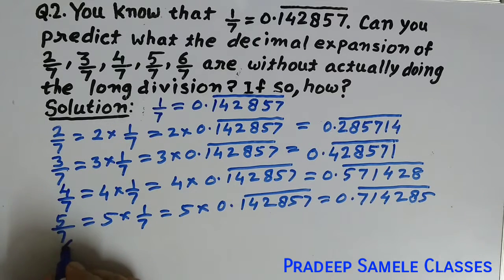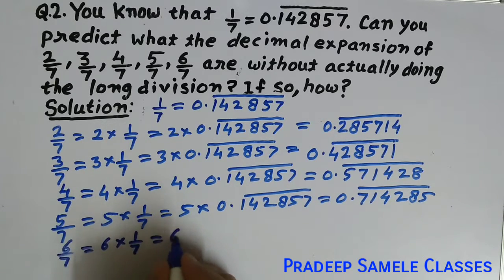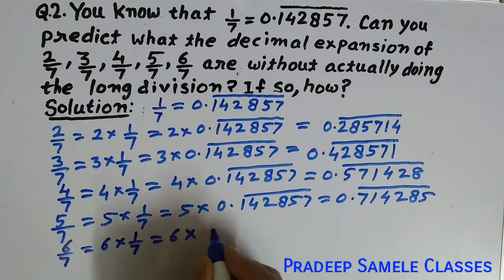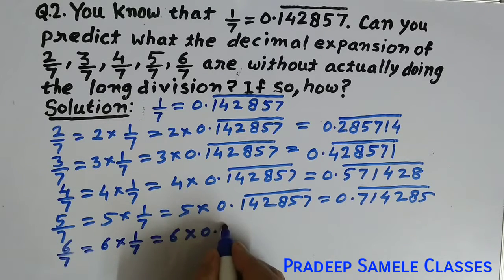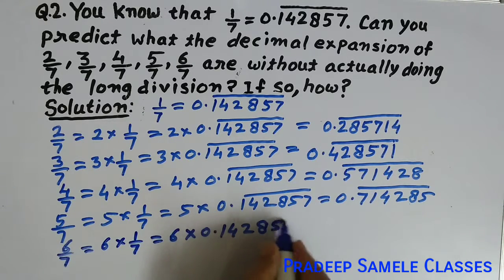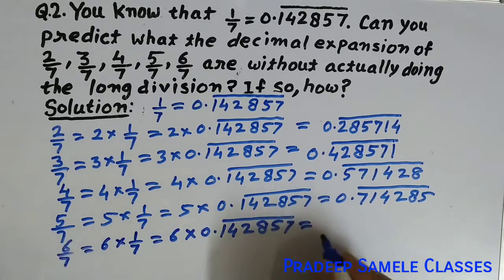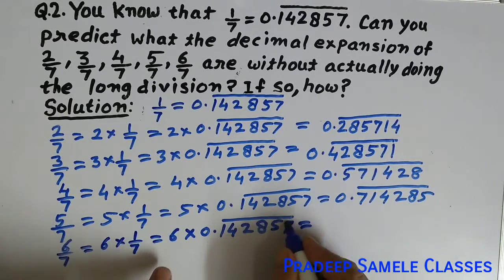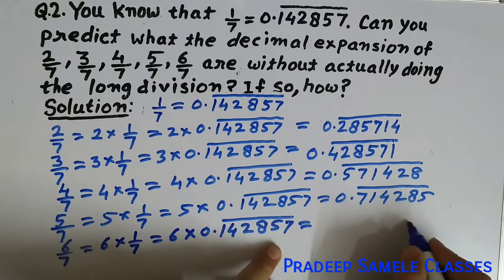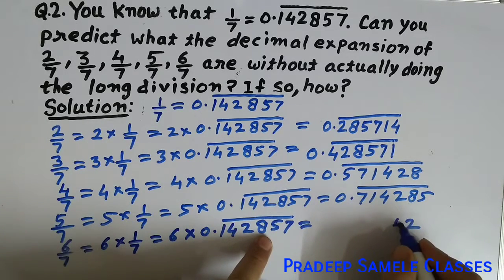Now for 6 by 7, we have 6 into 1 by 7, which is equal to 6 into 0.142857 bar. Now we will multiply 6 by each digit: 6 times 7 is 42, carry 4.